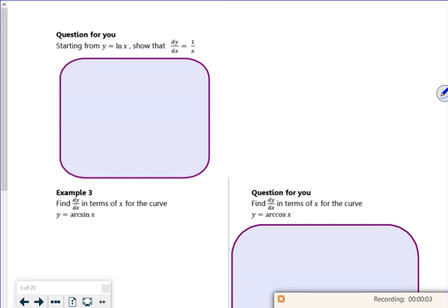Hiya, so it says question for you: starting with y equals ln x, show that dy/dx is 1 over x. That's not a question for you, that's proper full on. Right, I'm going to run through it because it's really really messy.